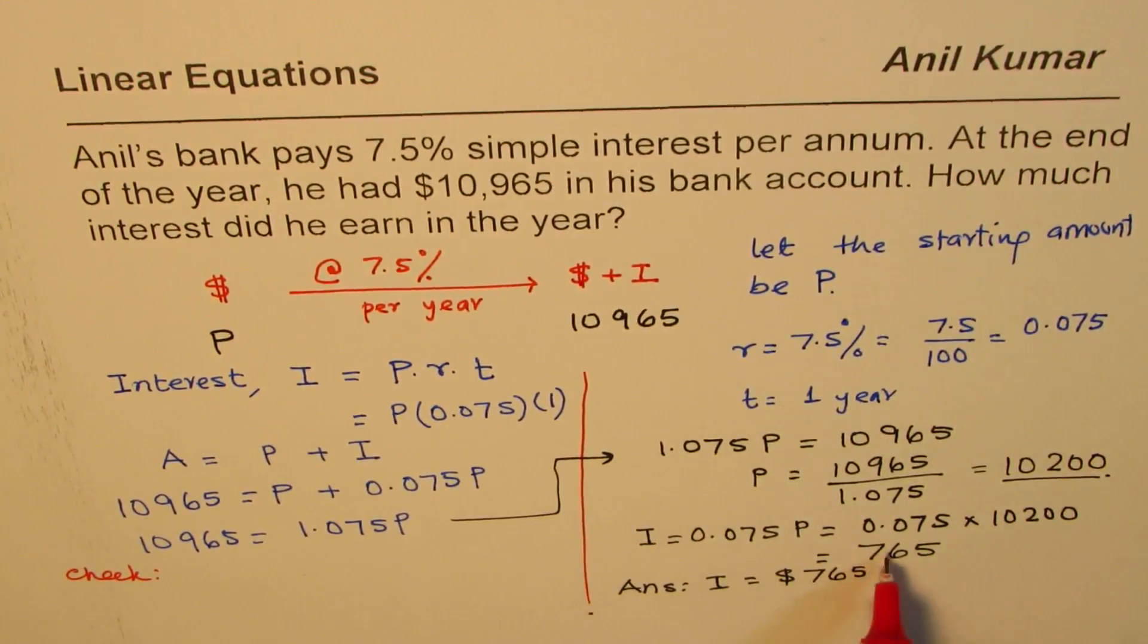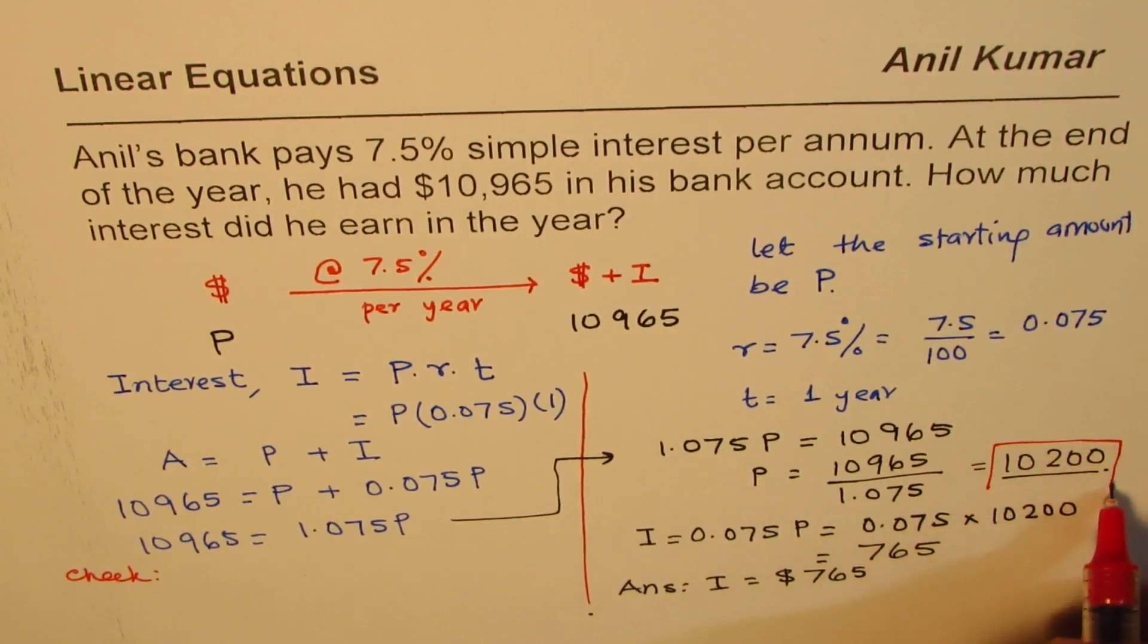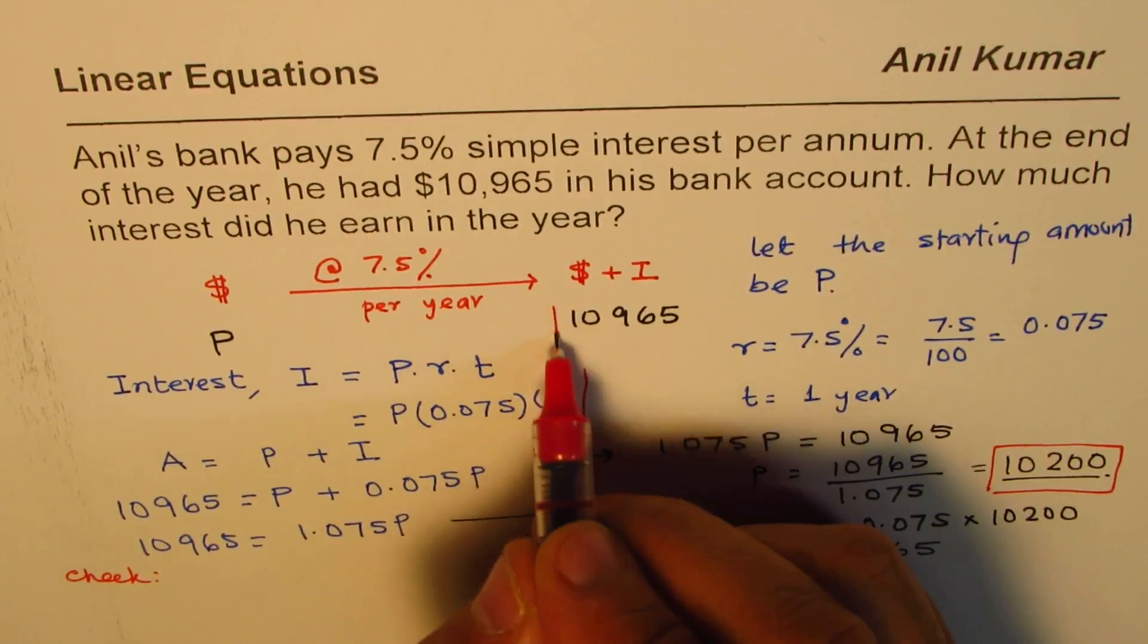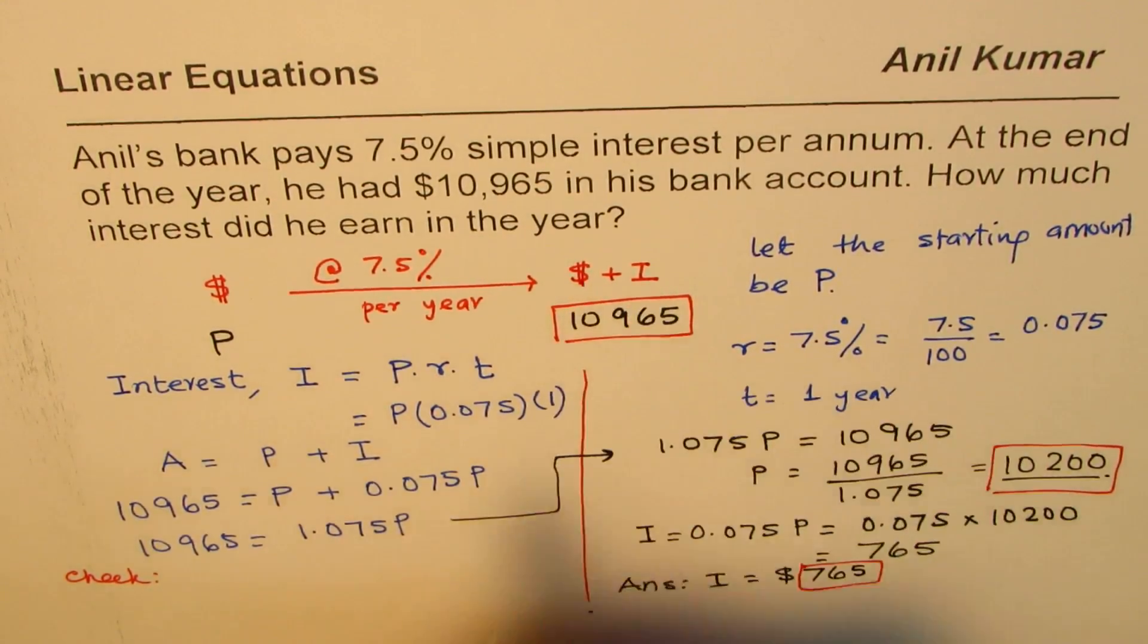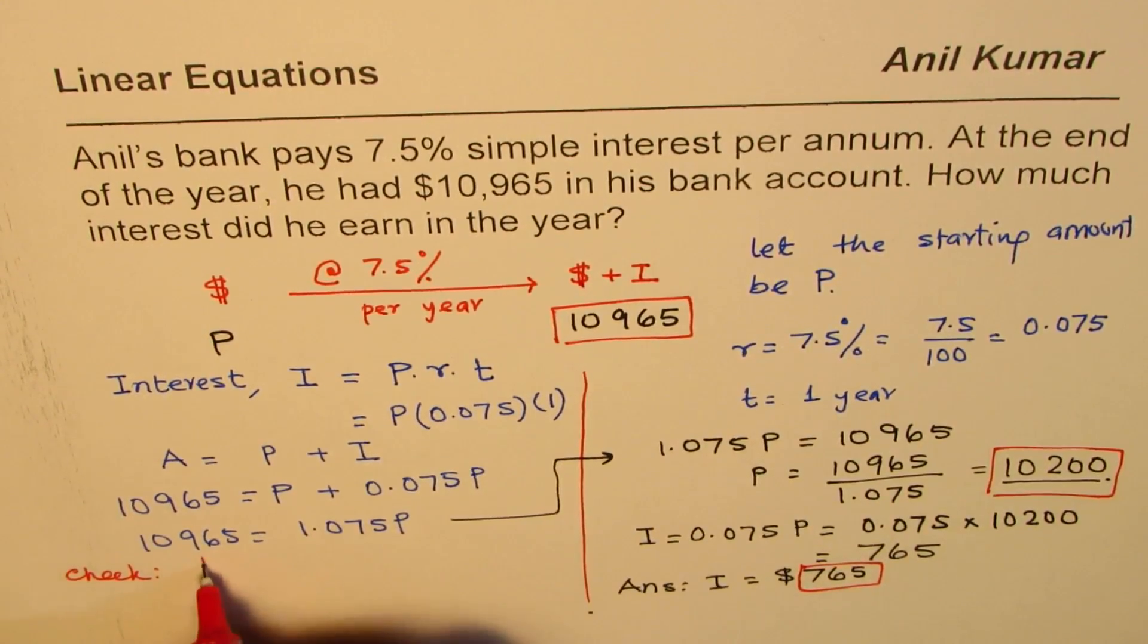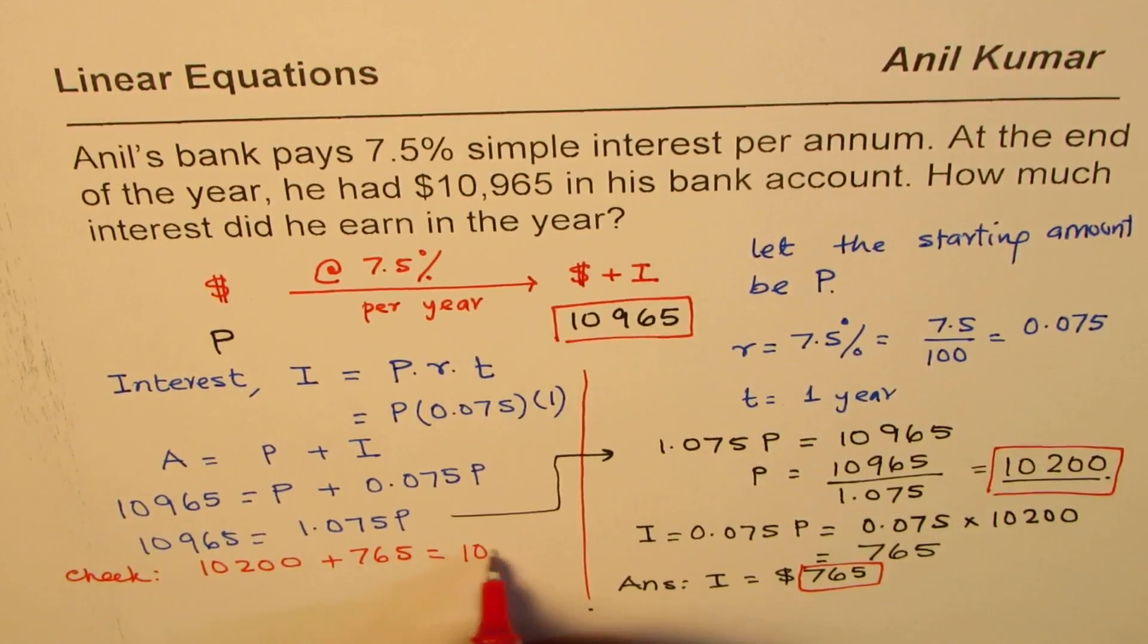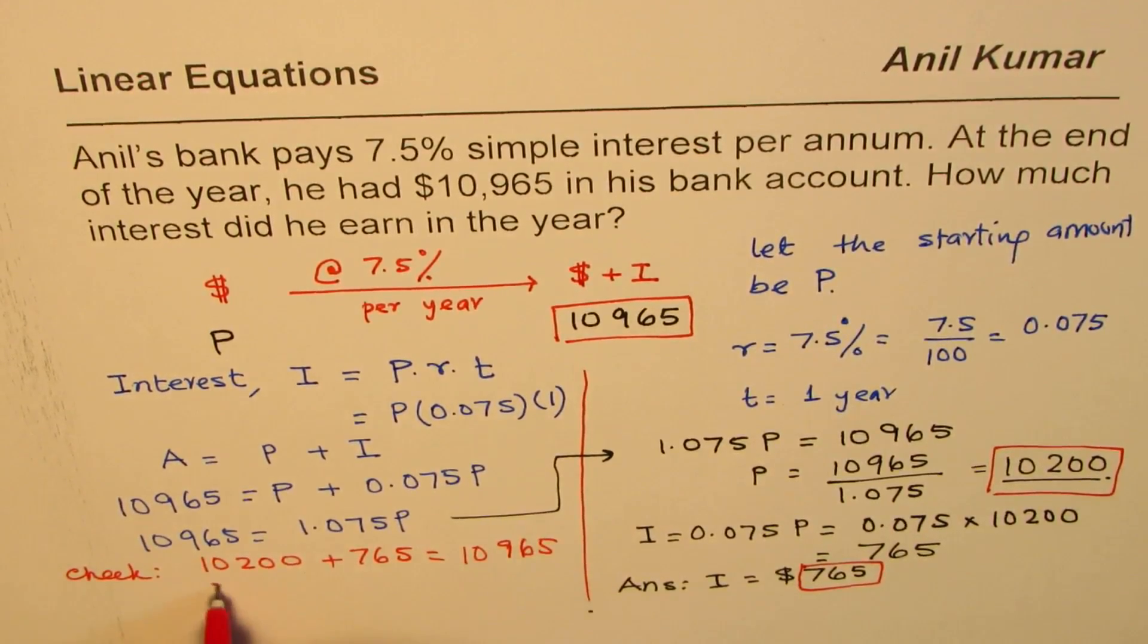So, to check if I add principle which is this much and the interest what should I get? I should get this number. That's what I'm saying. So, let's do it. So, we have 10,200 plus 765. Well, that indeed is 10,965. So, that is the check.